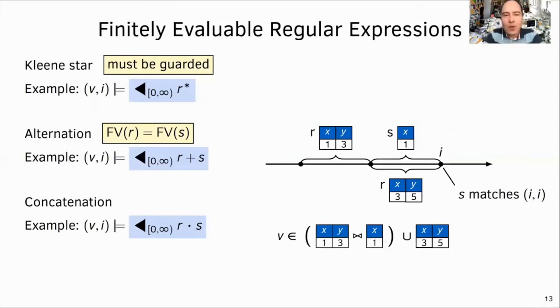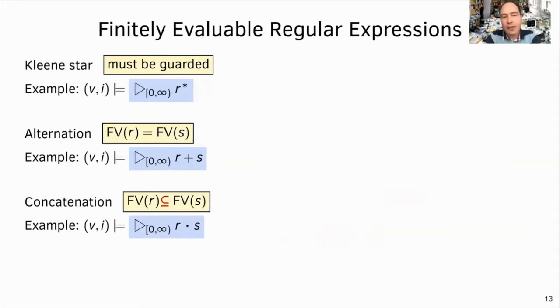And finally, consider concatenation. One would be tempted to treat it as a conjunction and just use a join. However, it hides a union if s matches an empty pattern in this case. In the example valuation on the right, valuation v is the union of two cases. The first case is where both r and s have non-trivial matches, and then they are joined. And the other case is where only r has a non-trivial match, while s matches an empty pattern. Therefore, free variables of s must be contained in free variables of r. And you can imagine now that the idea is symmetric for future match operators.